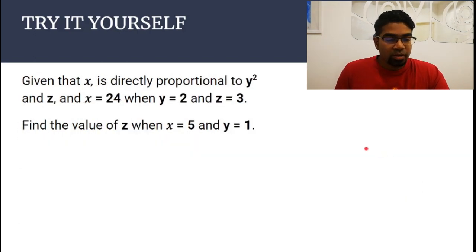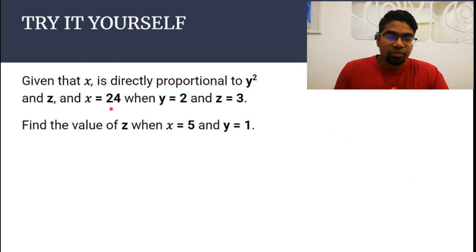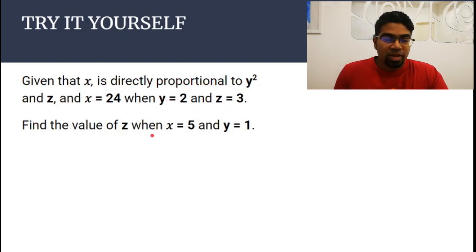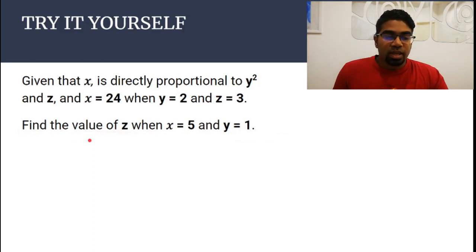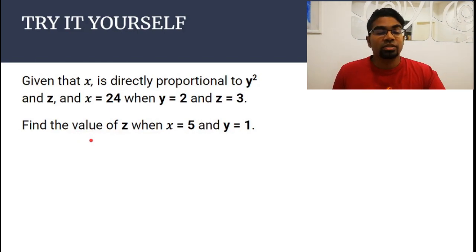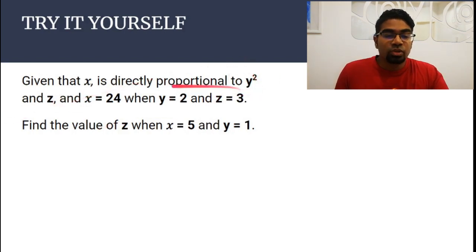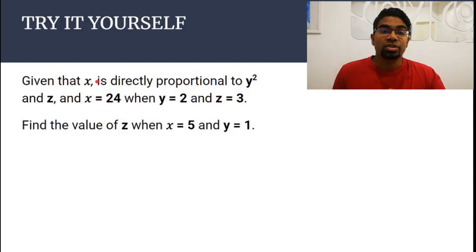Let's try a question. Given that x is directly proportional to y squared and z, and x is 24 when y is 2 and z is 3, find the value of z when x is 5 and y is 1. The first thing we always have to do is find the relationship between all the unknowns, and to find that relationship we just have to find the equation. So first we find the equation — write down the relationship first.